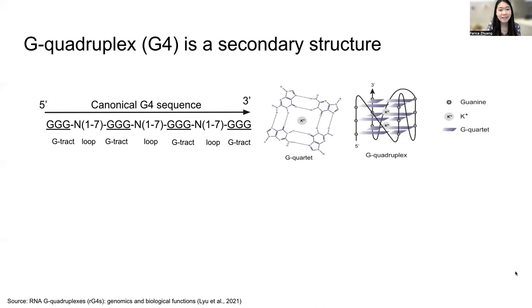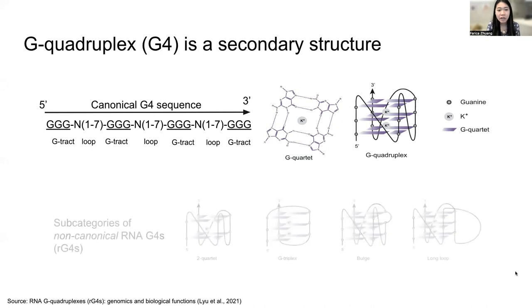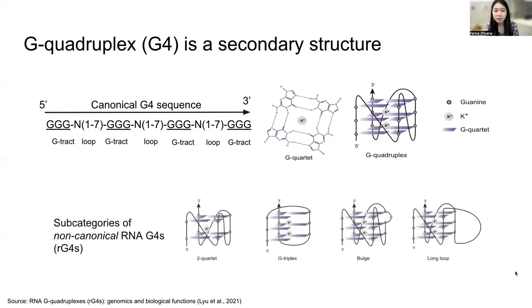For RG4, besides the canonical G4, there are also non-canonical G4 structures, and within non-canonical structures, there are subcategories or subtypes of RG4.